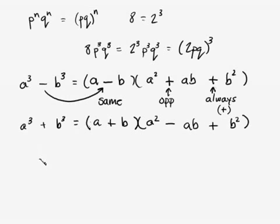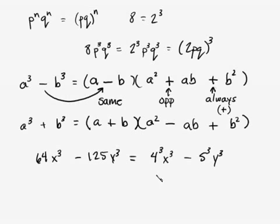Alright, so let's do something else. What if we have 64x cubed minus 125y cubed? Alright, well that's the same as this. That's the same as saying, well 64 really is the cube of 4. So that's 4 cubed x cubed minus 125 is the cube of 5, so that's 5 cubed y cubed. Okay, so this could be written more simply like this. 4x the quantity cubed minus 5y the quantity cubed.